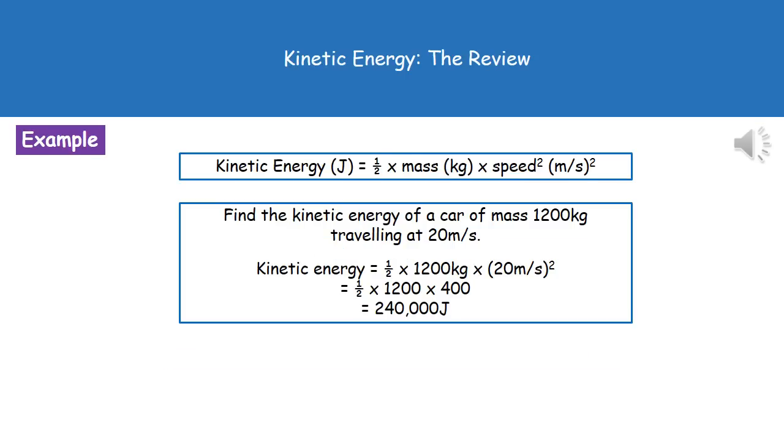To give you an example of the kind of calculation you might need to do. The question there, find the kinetic energy of a car of mass 1,200 kilograms traveling at 20 meters per second. The equation we need to use is always printed on page 2 of our exam booklet. You flip that and you find kinetic energy equals half times the mass times the speed squared.